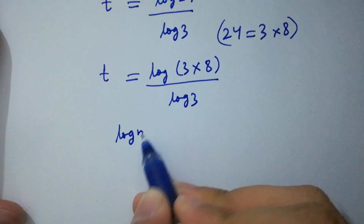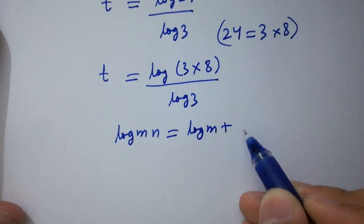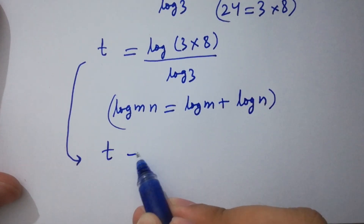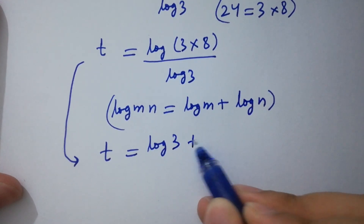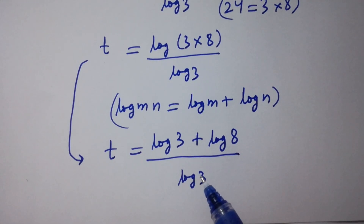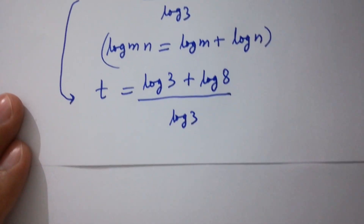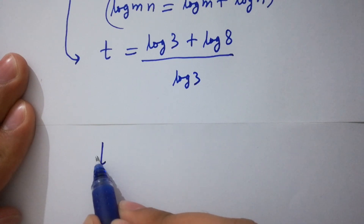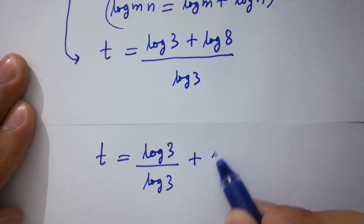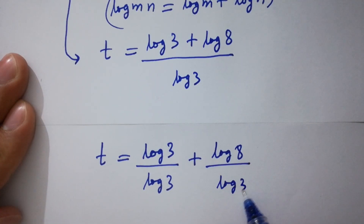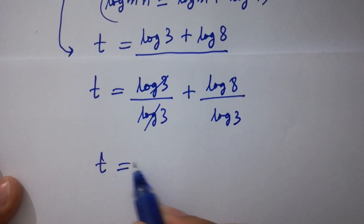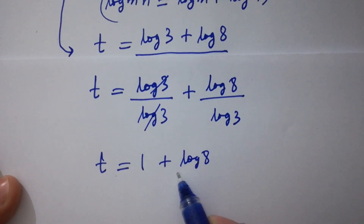Expanding the numerator using log properties: log(3 times 8) equals log 3 plus log 8. Separating the fractions, t equals log 3 over log 3 plus log 8 over log 3, which gives t equal to 1 plus log 8 over log 3.